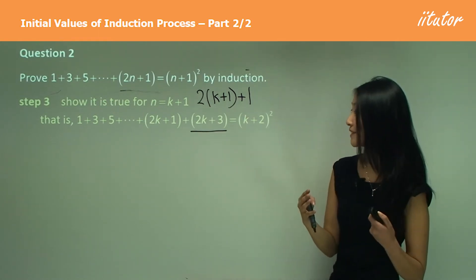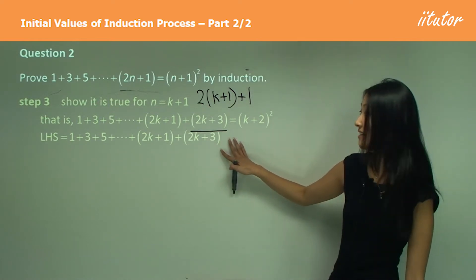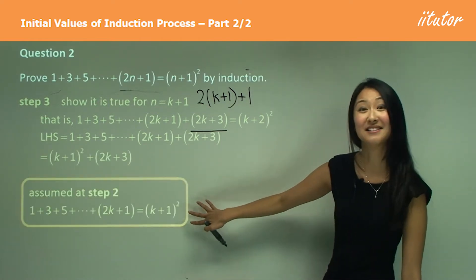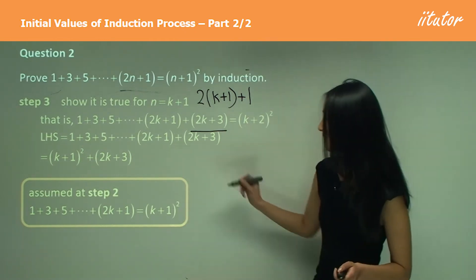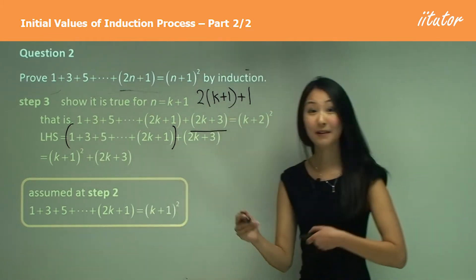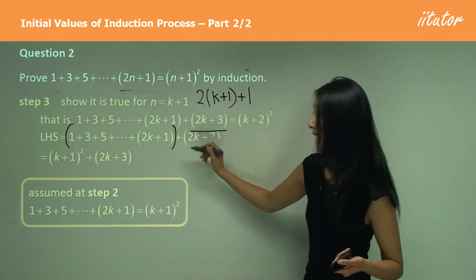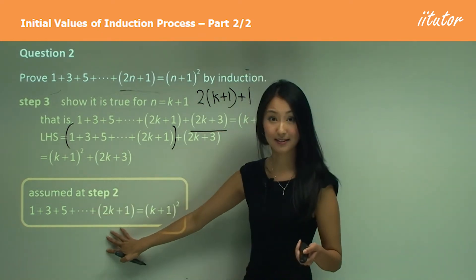And that's important to remember, because when we use the left hand side, we need to use that assumption that we've made in step two. Can you see how here, this part? So the one plus three plus five till two k plus one looks exactly the same as the left hand side in step two.